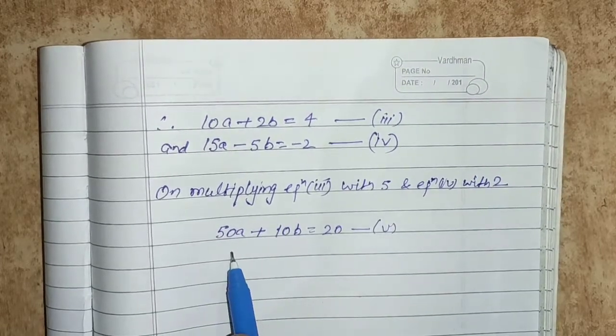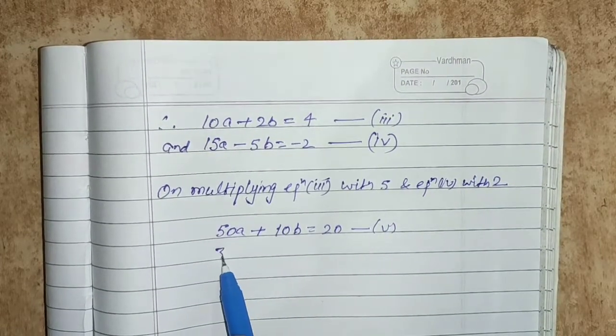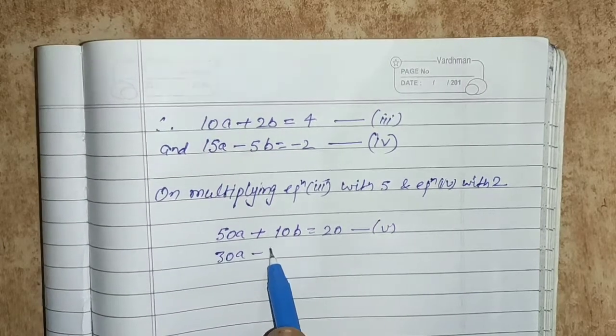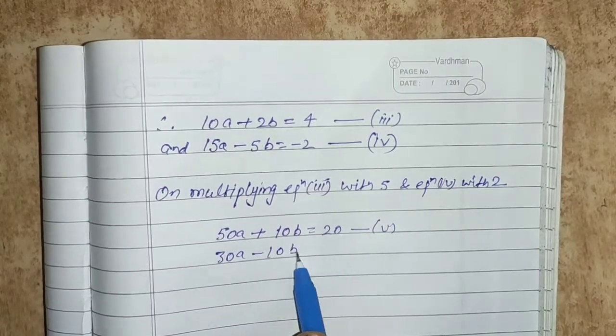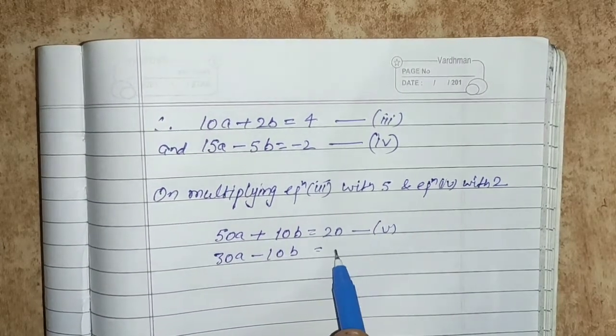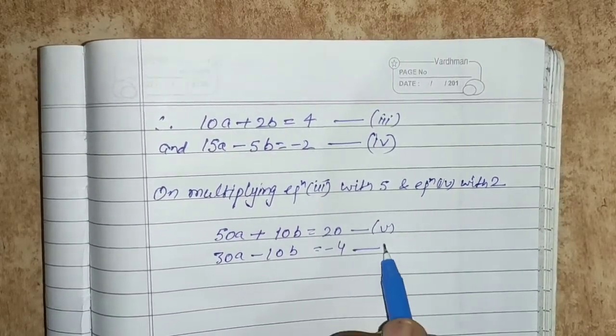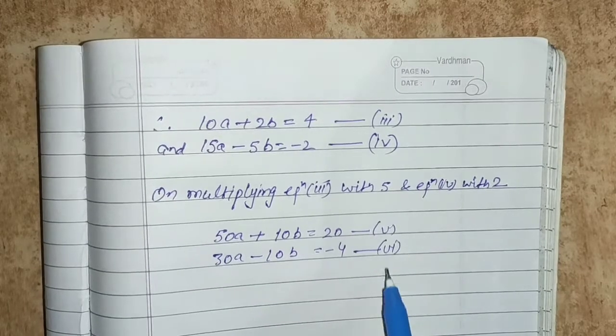You can see 10b and minus 10b, so we add equations 5 and 6. On adding, the b terms cancel. We have 50a plus 30a equals 80a, and 20 minus 4 equals 16.